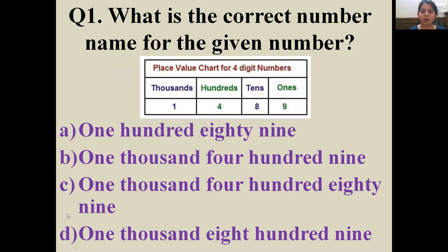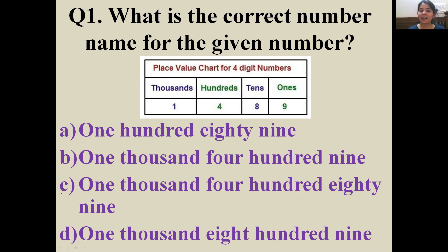Write down the correct option on your sheet, then check whether your answer is correct. Is it 189, 1489, 1409, or 1809? The correct answer is absolutely 1489. Well done, kids!